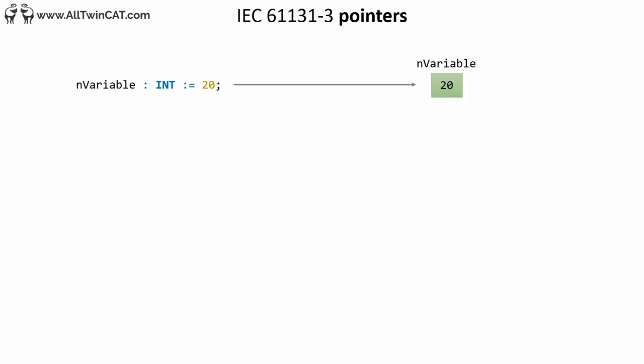Our next subject is pointers. Pointers are a symbolic representation of addresses — a symbolic representation for an address in the memory of the PLC, so you can access a memory location by name. A pointer is a variable in itself that holds the address of the memory location of the variable it points to. In a 64-bit system, a pointer uses 64 bits — 8 bytes. What we have in this example is a pointer to an integer. If you write it like this, the pointer doesn't point to anything and its value would just be address 0.